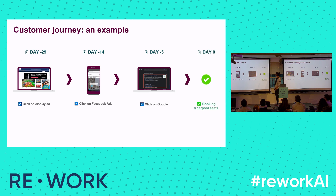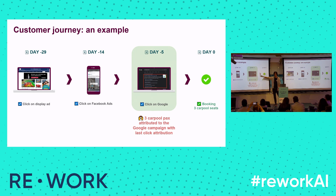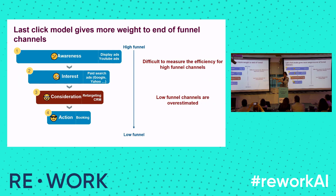He comes to BlaBlaCar and books a carpooling trip today. The last-click attribution model looks at all clicks up to 30 days before. It attributes the whole conversion — let's say a revenue of 50 euros — entirely to Google, giving zero to Facebook and zero to display. As you can imagine, this is not optimal: low-funnel channels are overestimated, high-funnel channels are difficult to measure, and marketing stakeholders don't invest enough on those ads as a result.